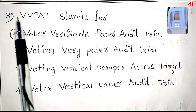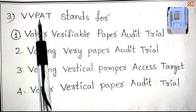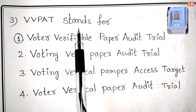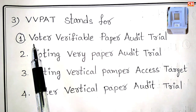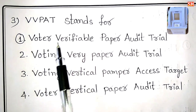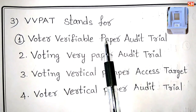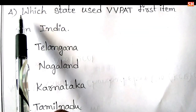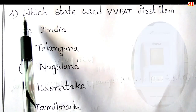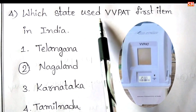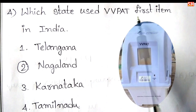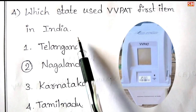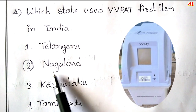Third question: VVPAT stands for. Answer: Voter Verifiable Paper Audit Trail. Fourth question: Which state used VVPAT for the first time in India? Answer: Nagaland.